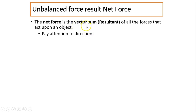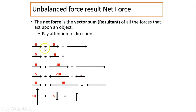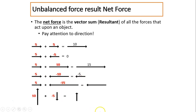Because it's a vector sum, we need to pay attention to directions. For example: 5 to the right plus 5 to the right gives 10 to the right. But 5 to the right plus 5 to the left gives zero — they balance. 5 to the right plus negative 10 (to the left) gives negative 5, meaning 5 to the left. This is different from an algebraic sum, where direction is ignored.